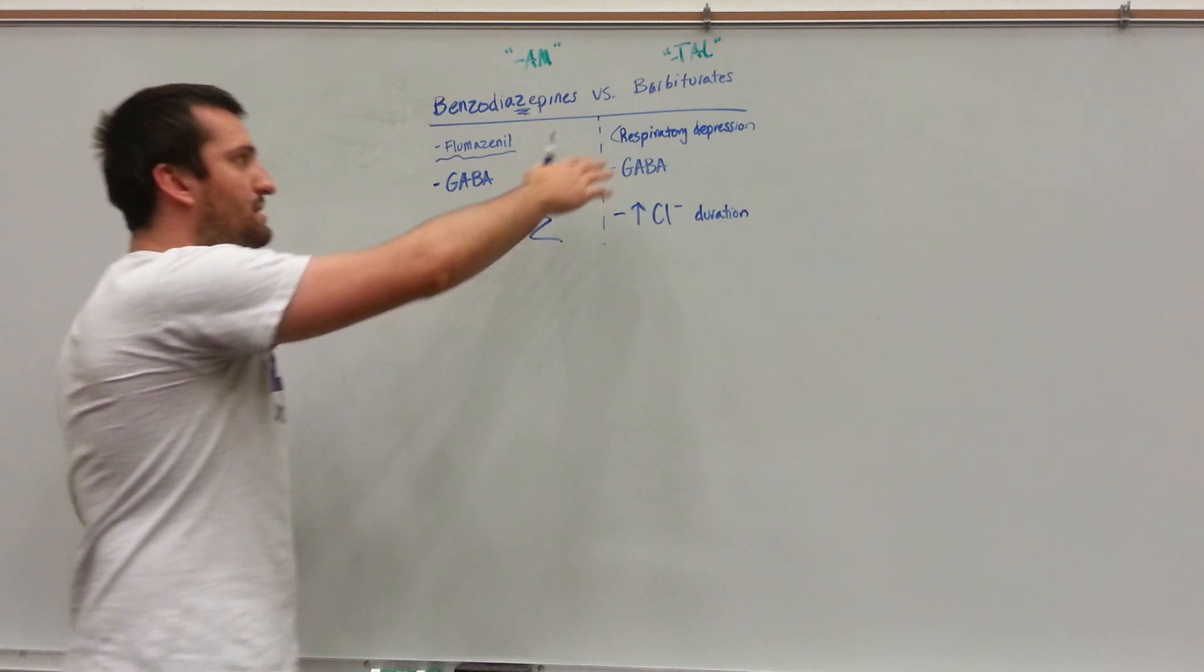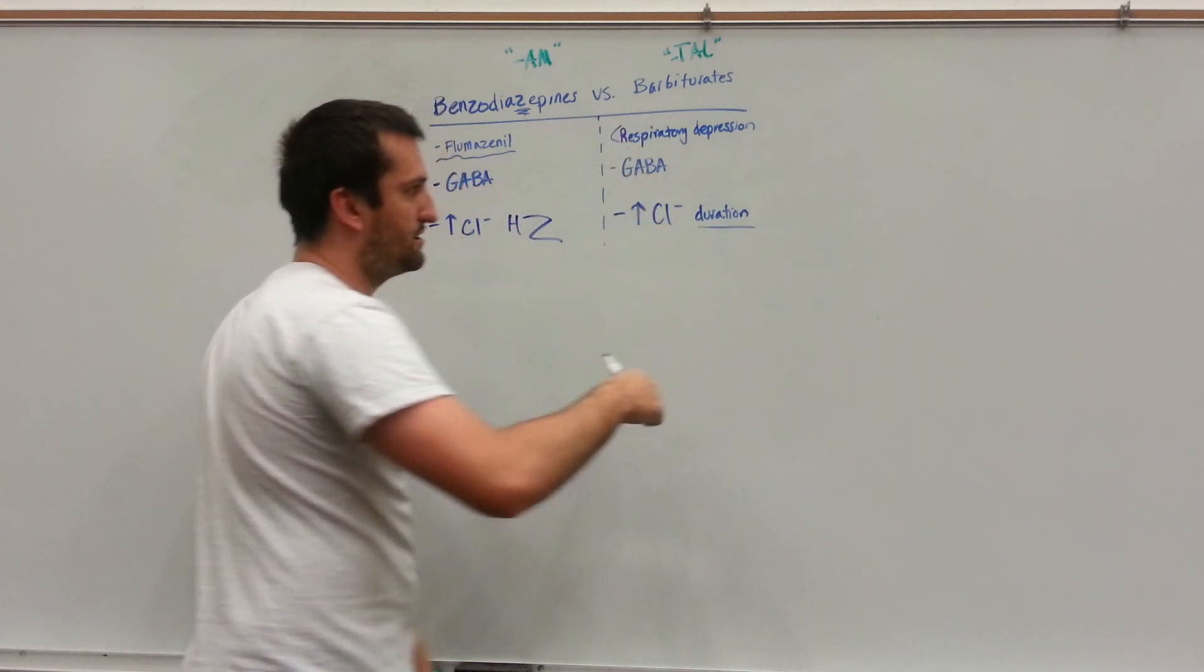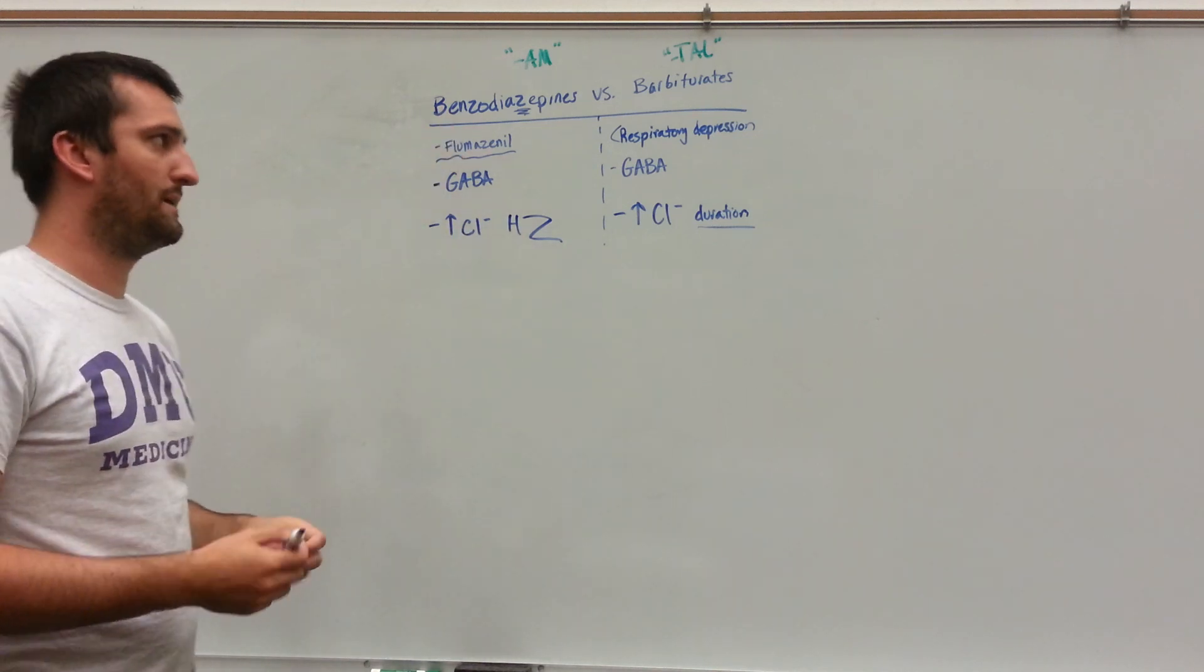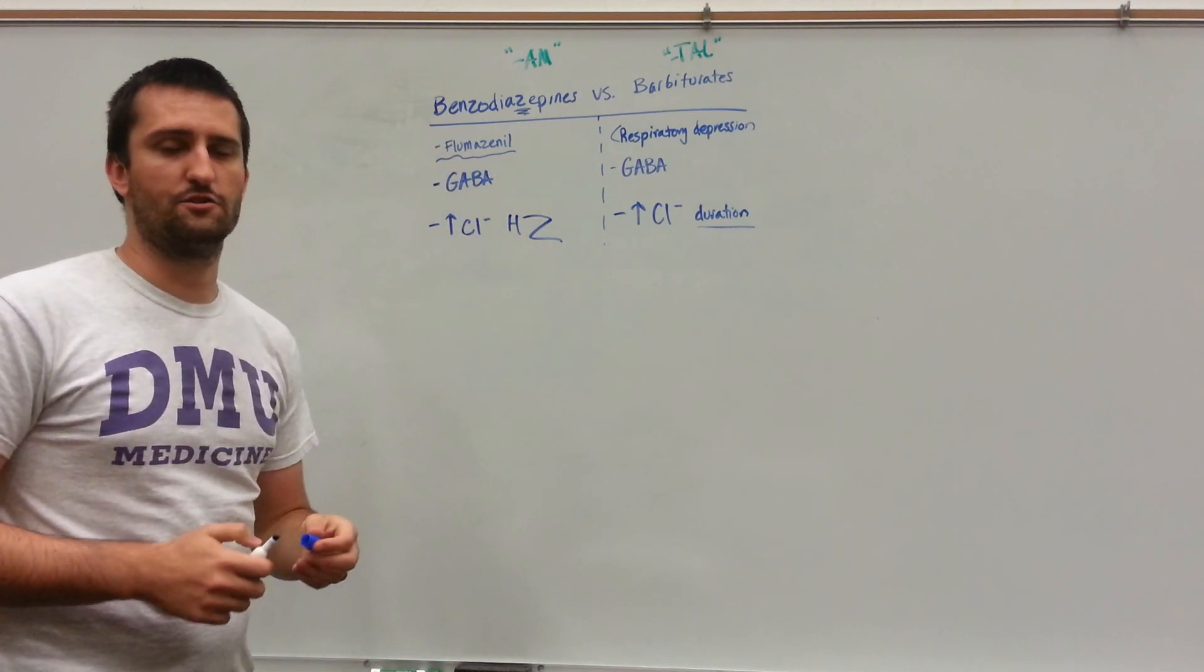While barbiturates, on the other hand, increase the duration. So just remember, frequent Z is the benzos, while barbiturates increase the chloride channel duration.